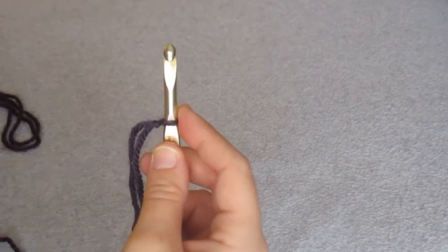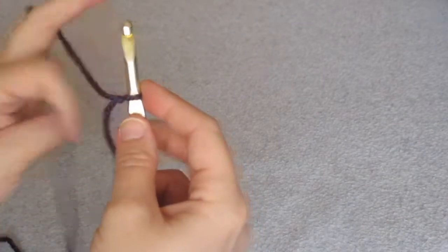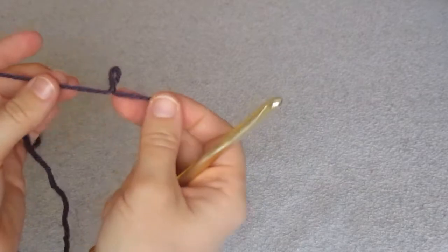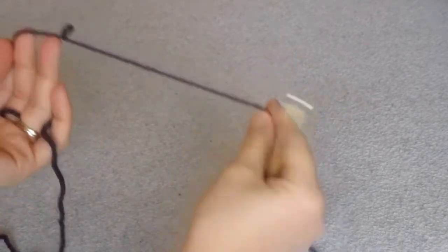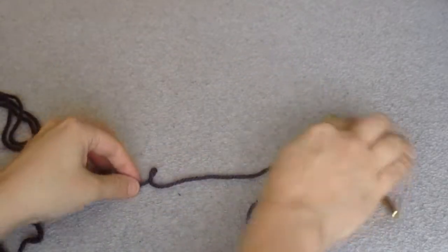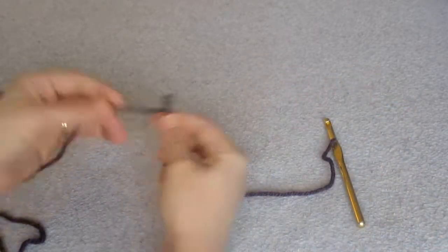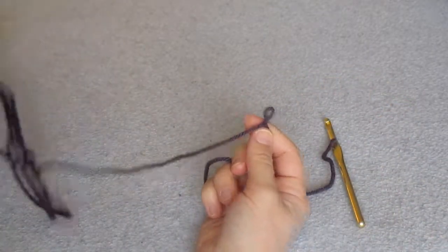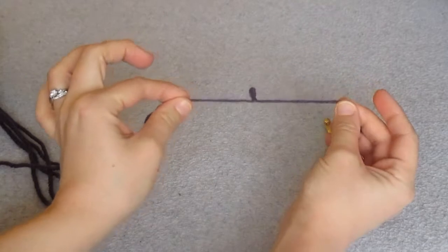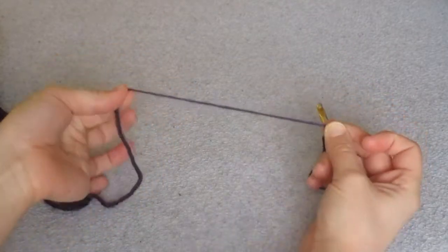So if you see it and you think, I don't like that at all, all you have to do is grab from each end, the side that leads to the end and the side that leads to the skein, and you pull until it's gone.